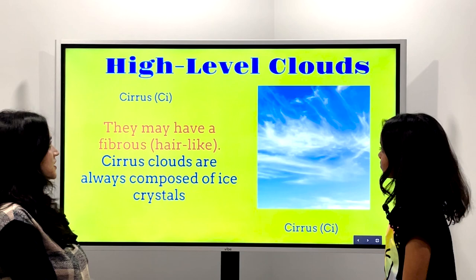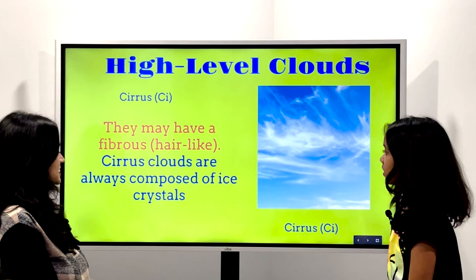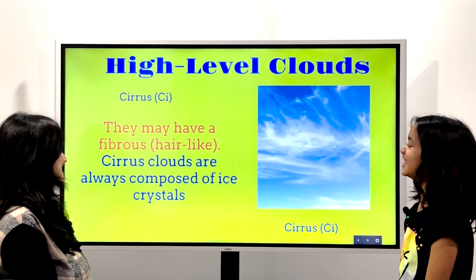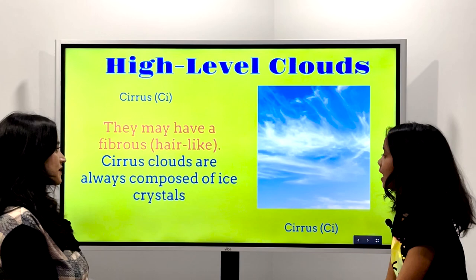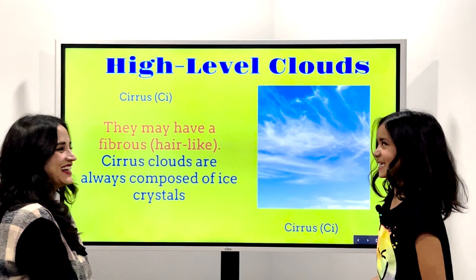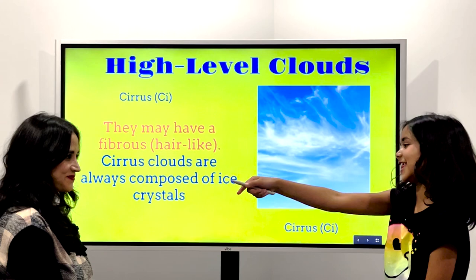So what happens with this level of clouds? They may have hair-like appearance — yeah, like a girl's hair. Cirrus clouds are always composed of ice crystals. So they are actually all ice crystals. When you wake up in the morning your hair looks like that! I like messy hair. I like clean hair.